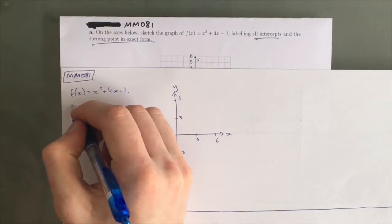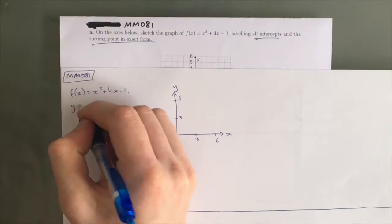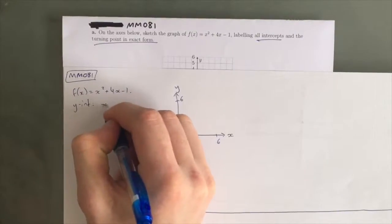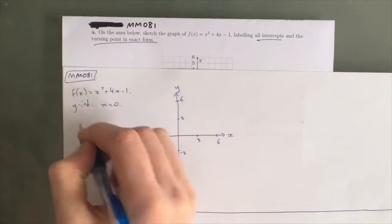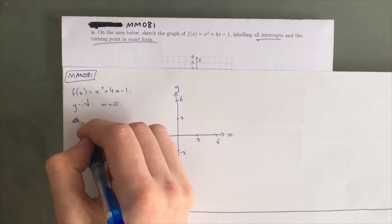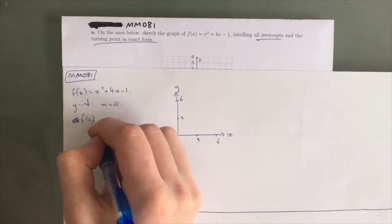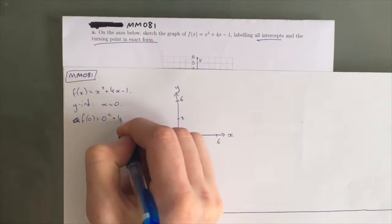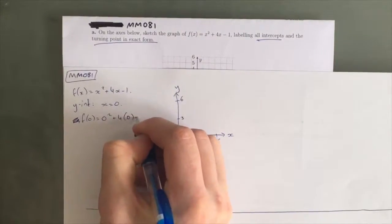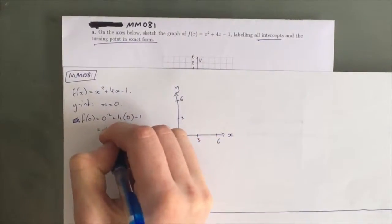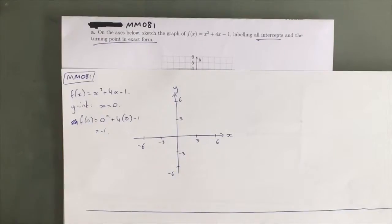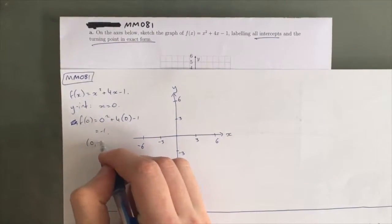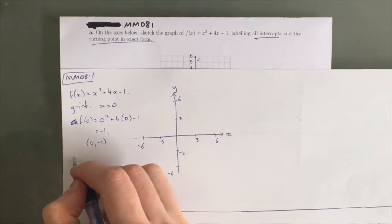First, we've got our y-intercept, which is when x equals 0. So we get f of 0 equals 0 squared plus 4 times 0 take 1, which is simply negative 1. So we know that our y-intercept is (0, -1).